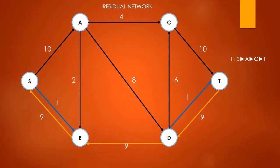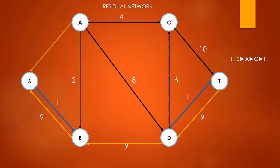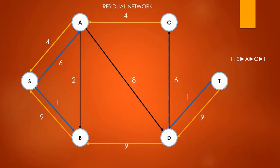Once again, we begin to update the residual network. We look at the maximum flow of the path, which is the same as the minimum weighted edge, and push that back for each of the edges in the path. For edge S to A, we have maximum capacity of 10, so we can push back 4, leaving 6 in capacity to push forward. For edge A to C, we push back 4 and the maximum capacity is 4, so we can't push anything forward. For edge C to T, we have maximum capacity 10, so we can push back 4 and have enough capacity to push forward 6.